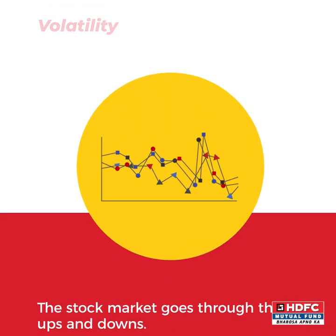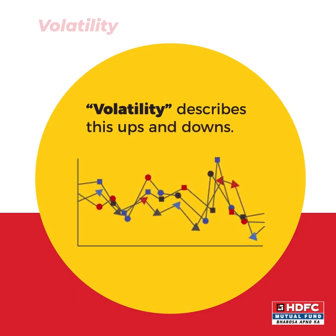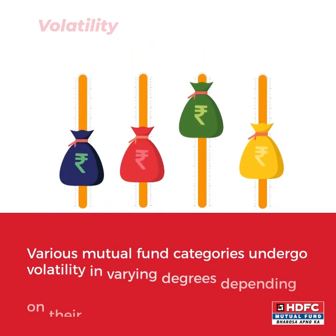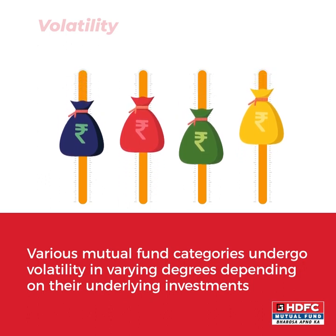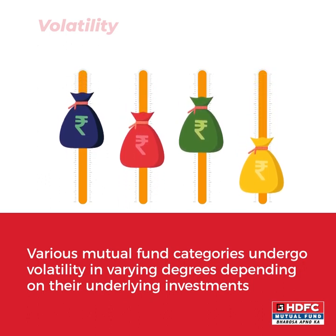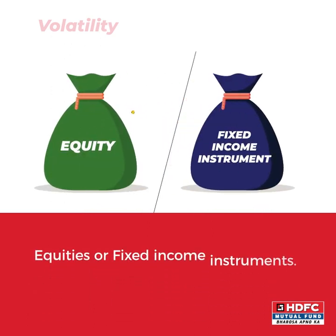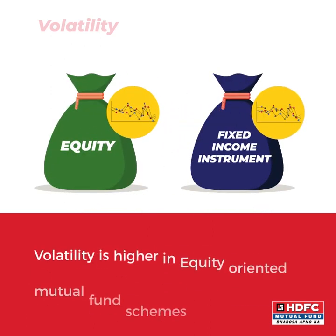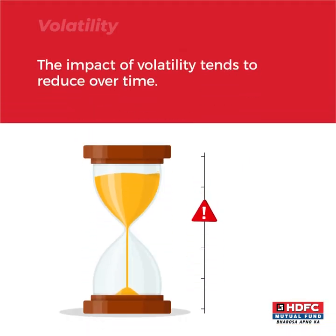The stock market goes through ups and downs, and the term volatility describes these ups and downs. Various mutual fund categories undergo volatility in varying degrees depending on their underlying investments — that is equities or fixed income instruments. For instance, equity oriented mutual fund schemes undergo a higher level of volatility than mutual fund schemes investing in fixed income instruments.